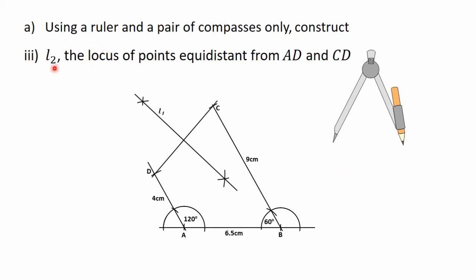The next part of the question says that we should construct L2, which is the locus of points equidistant from the line AD and the line CD. We have learned from the previous videos that the locus of points equidistant from two intersecting lines is the bisector of the angle formed between the two lines. So here, the locus will be the bisector of the angle formed between AD and CD. They meet at point D, so the angle is formed at point D.